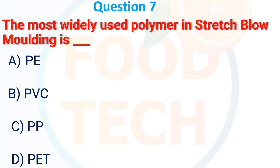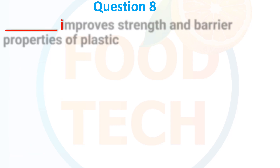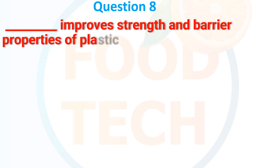The most widely used polymer in stretch blow molding is: (a) PE, (b) PVC, (c) PP, (d) PET. The answer is (d) PET.